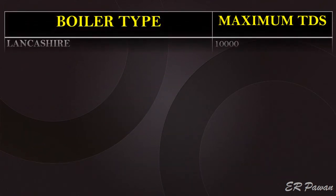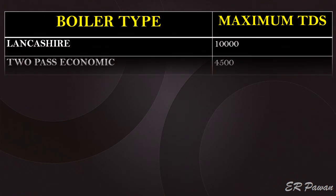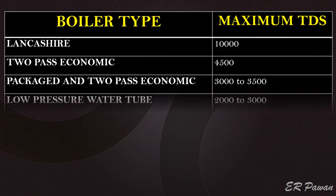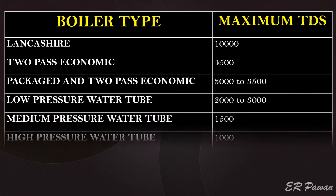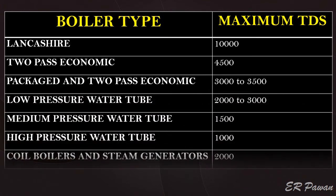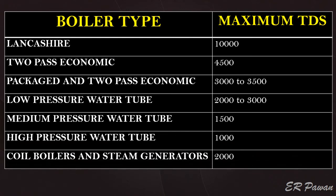For reference, the maximum permissible TDS limits in boiler water by boiler type are as follows: Lancashire boiler — 10,000 ppm; 2-pass economic boiler — 4,500 ppm; Packaged and 2-pass economic boiler — 3,000 to 3,500 ppm; Low pressure water tube boiler — 2,000 to 3,000 ppm; Medium pressure water tube boiler — 1,500 ppm; High pressure water tube boiler — 1,000 ppm; Coil boiler and steam generators — 2,000 ppm.